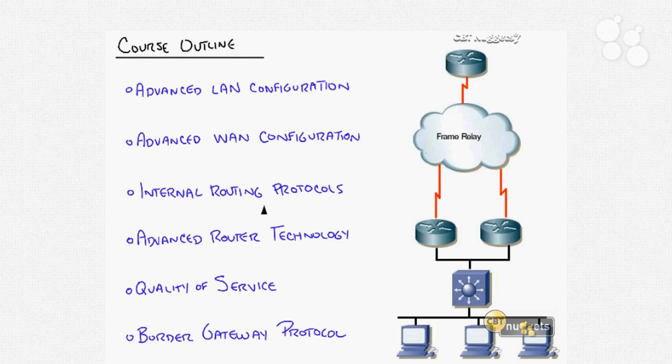We get into the internal routing protocols and walk through each one at a time. We start with the distance vector world and RIP version two. The CCIE exam has removed the classful protocols — IGRP and RIP version one — so the closest we'll talk about is RIP version two, the classless version. We then get into EIGRP, and then spend the rest of the series primarily on OSPF — a major protocol to understand — and IS-IS (Intermediate System to Intermediate System), one of the other link-state routing protocols you may encounter.